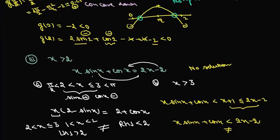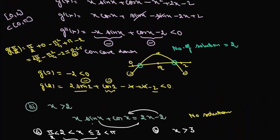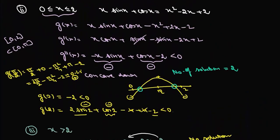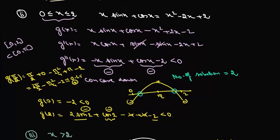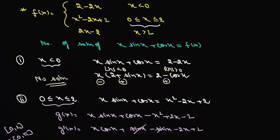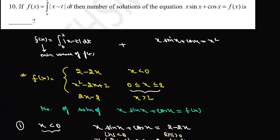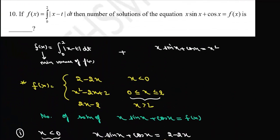The only solutions occur when x lies between 0 and 2. Therefore, the total number of solutions to x·sin(x) + cos(x) = f(x) is 2, and that is the answer.